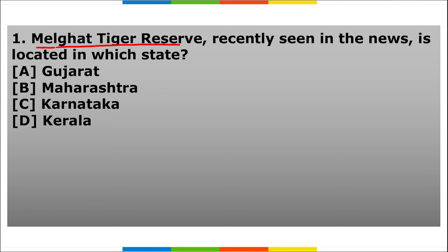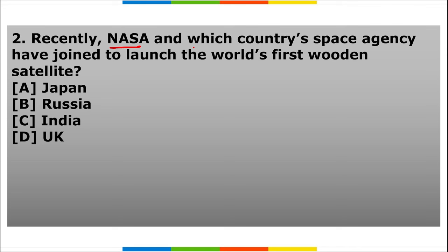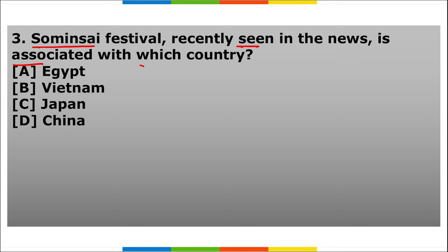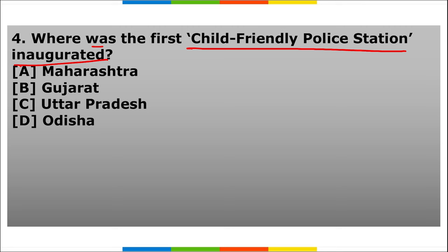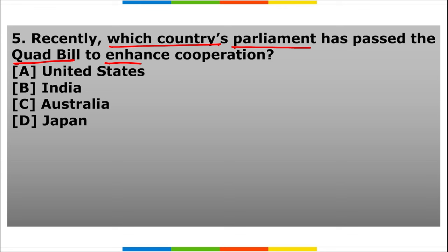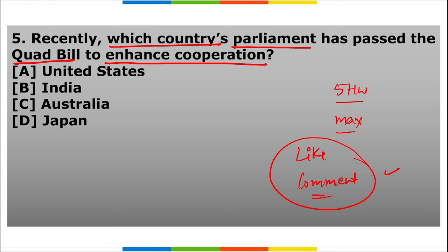Homework questions: 1) Melghat Tiger Reserve recently in the news — which state is it in? 2) NASA and which country's space agency joined to launch the world's first wooden satellite? 3) Swaminasai festival recently in the news is associated with which country? 4) Where was the first child-friendly police station inaugurated? 5) Which country's parliament passed the QUAD bill to enhance cooperation? Participate by commenting your answers below.